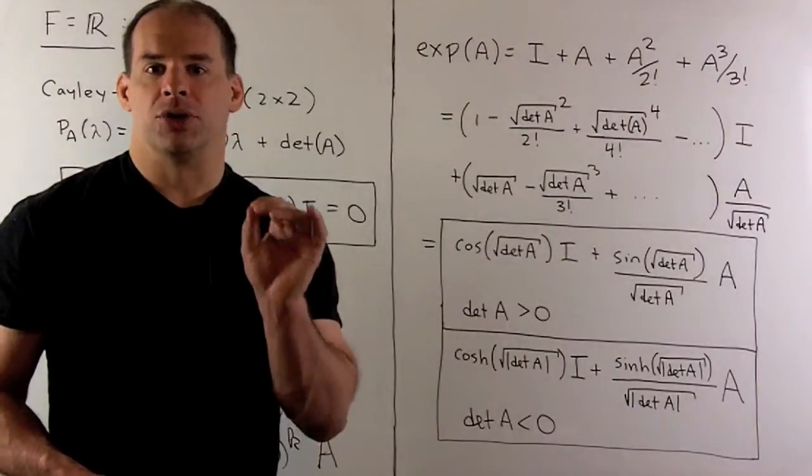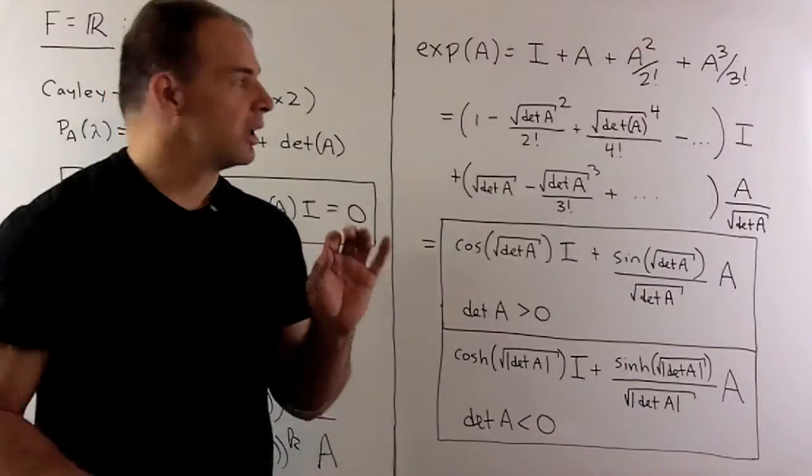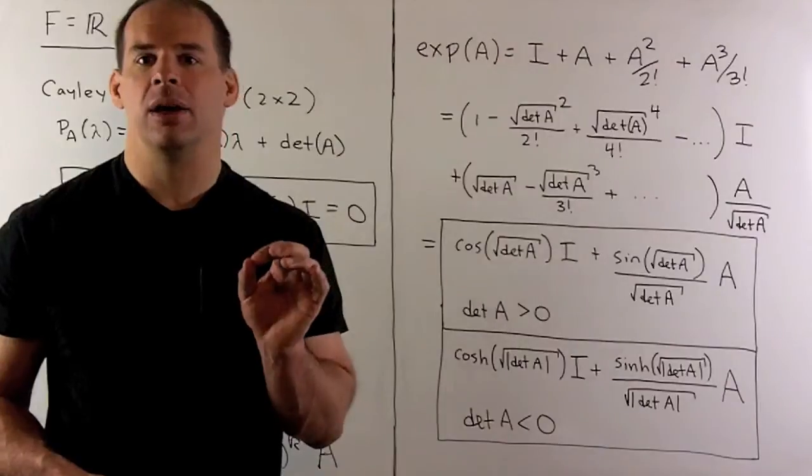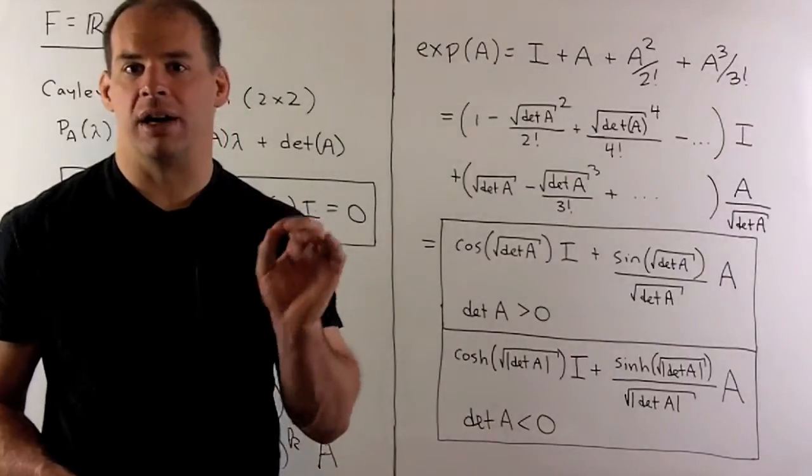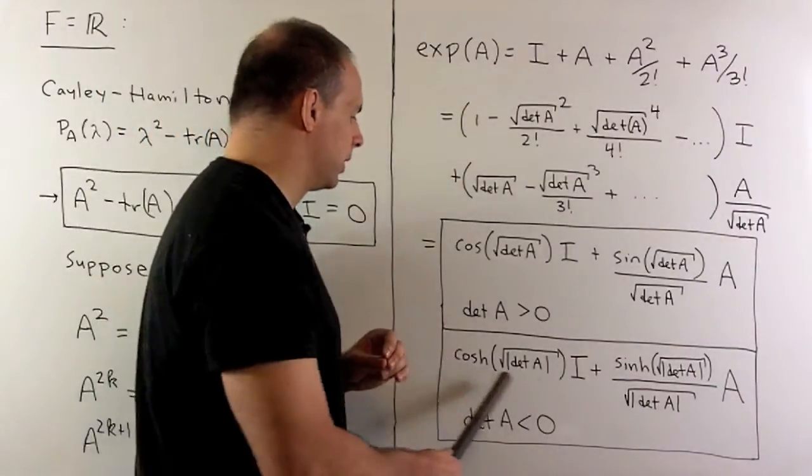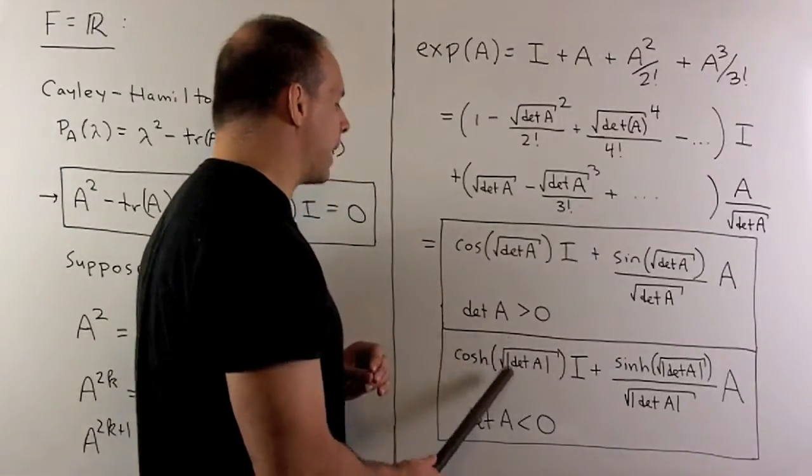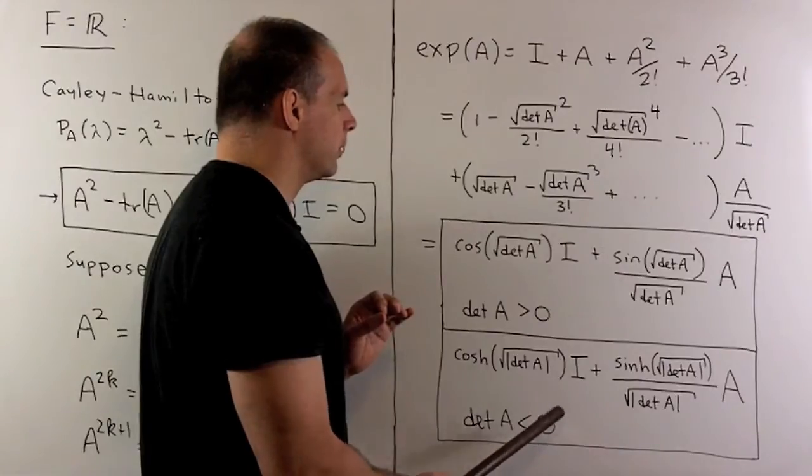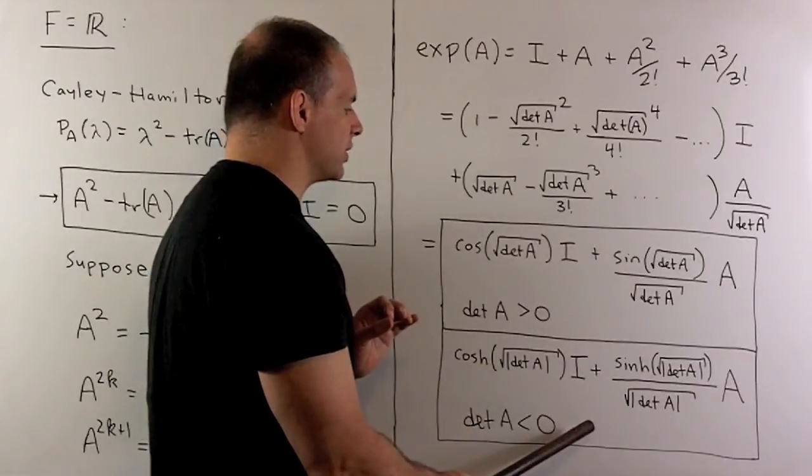Now, if the determinant of A is negative, we could sort out what we're doing with our series here. And what will happen is instead of cosine and sine, we get hyperbolic cosine and hyperbolic sine. So here, we're going to want to take square root of the absolute value of determinant of A. So that's when determinant of A is less than zero. So we have two nice formulas here.